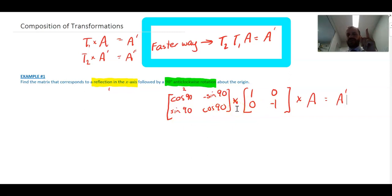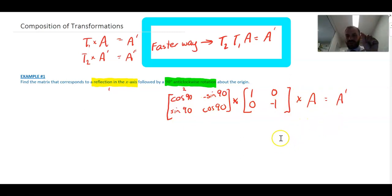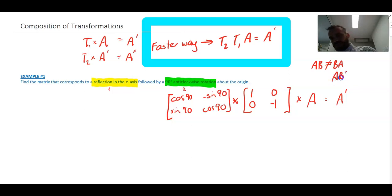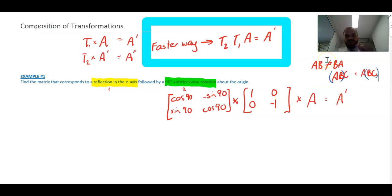You might think the order of multiplication matters, and it does — matrix multiplication is not commutative: AB does not equal BA. However, matrix multiplication is associative: (AB)C = A(BC), so it doesn't matter where you put the brackets. That means we can simply multiply T2 and T1 together to make a single transformation matrix.